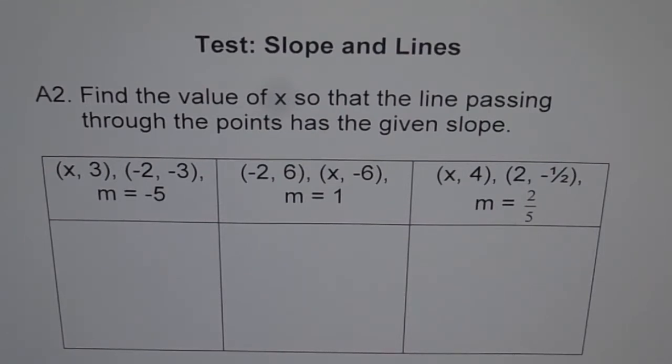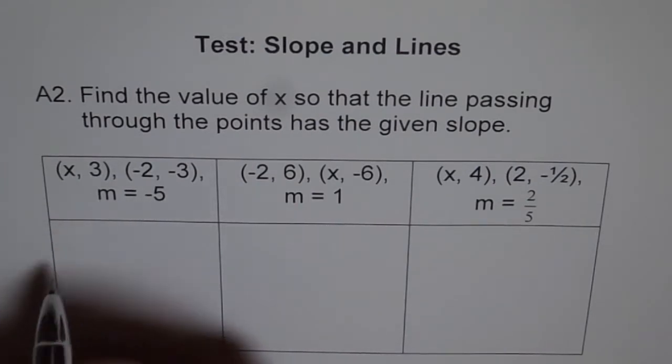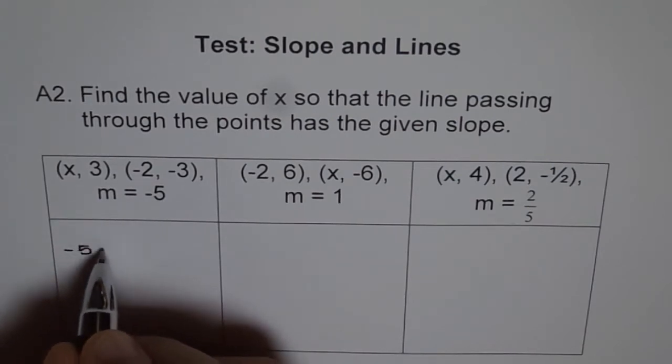We will adopt the same method. Minus 5 is your slope, so minus 5 equals what?